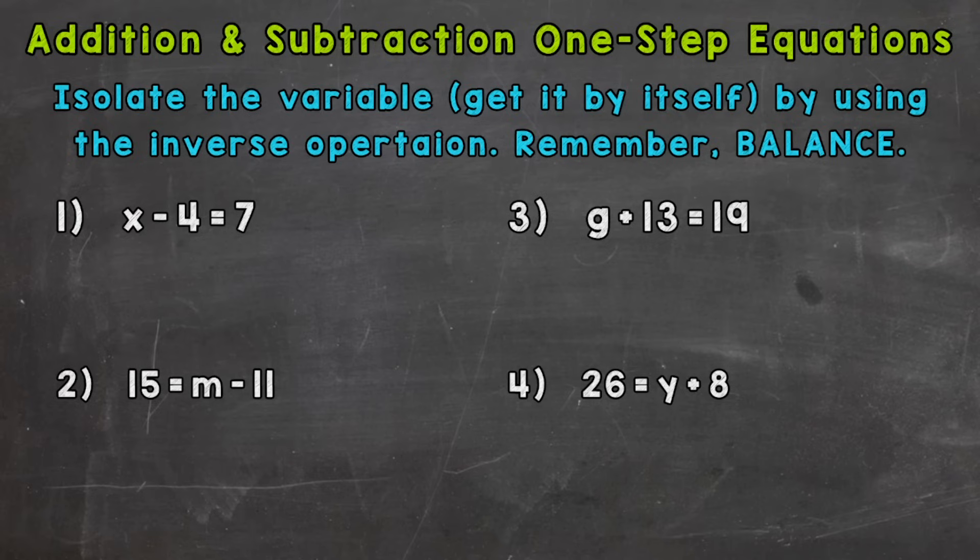At the top of the screen is a very important note. We need to isolate the variable, which means get it by itself, by using the inverse operation. Inverse operation means opposite operation. And we have to remember to keep everything balanced. So let's see exactly what that means as we go through our four examples here.